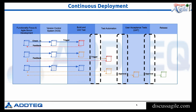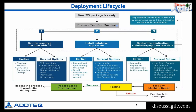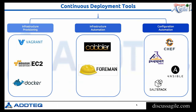Continuous deployment is about taking a ready build or software and enabling the testing team — whether manual or automation testing — to perform testing and provide feedback as quickly as possible. The deployment lifecycle involves getting a machine, installing the database, app server, and deploying the application. Current options include infrastructure provisioning, infrastructure automation, configuration management automation, with different tools available for each area.